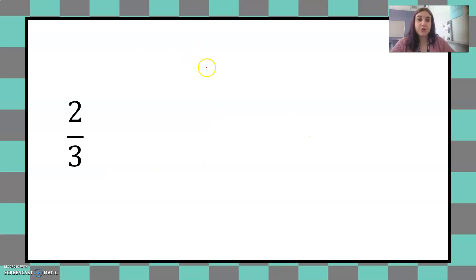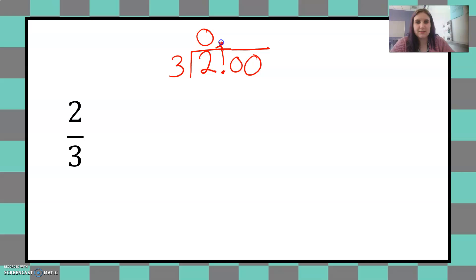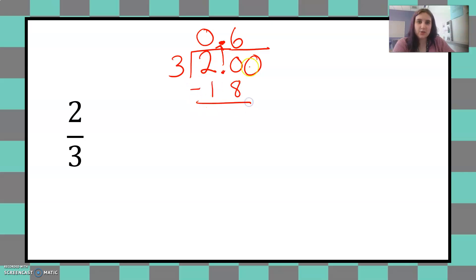Let's do an example: two thirds. Two goes inside and three goes on the outside. Three does not go into two, so I'm going to have to use some of those placeholders. Three does not go into two, so move the decimal point up. Three goes into 20 six times. Six times three is 18, so subtract 18. 20 minus 18 is two. Bring down the next zero. Again, I have a 20 — three goes into 20 six times.